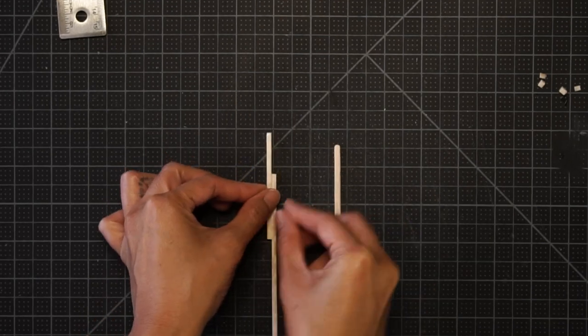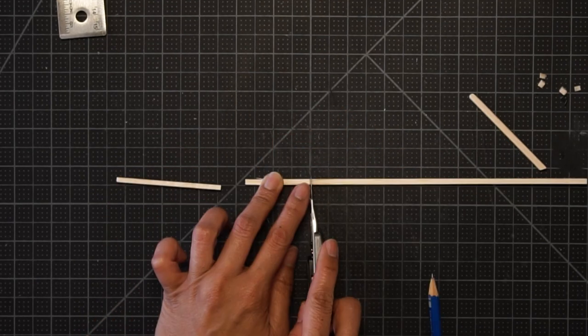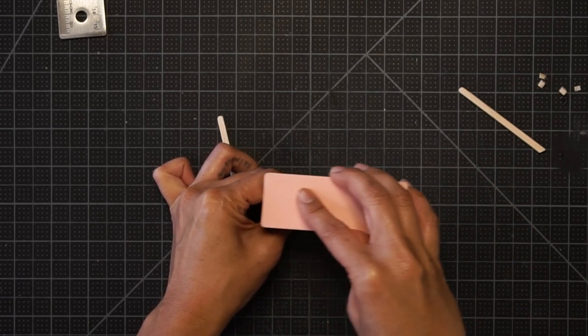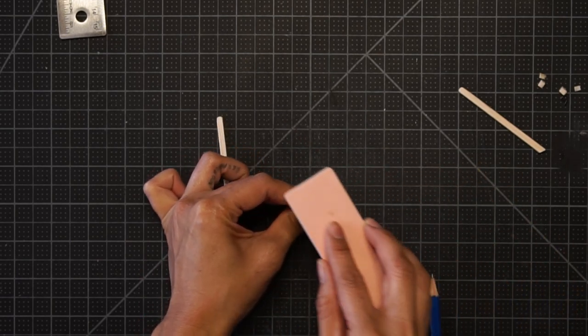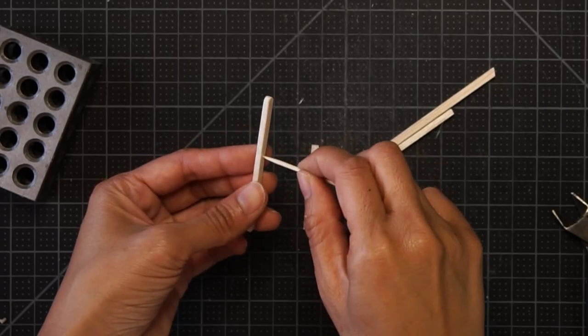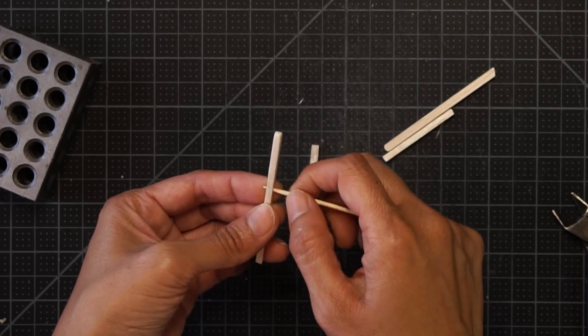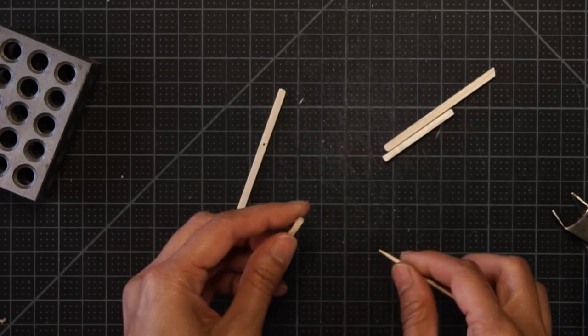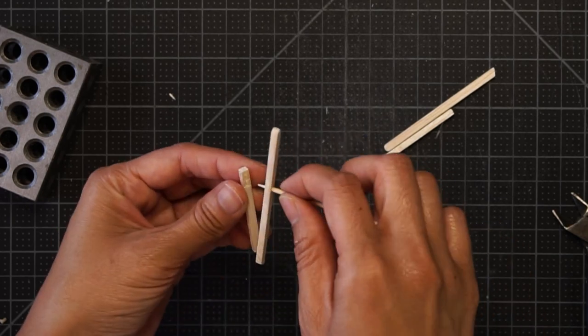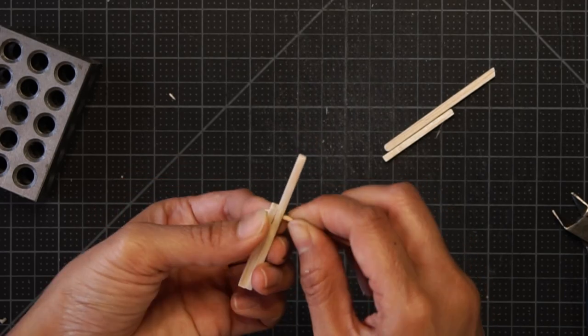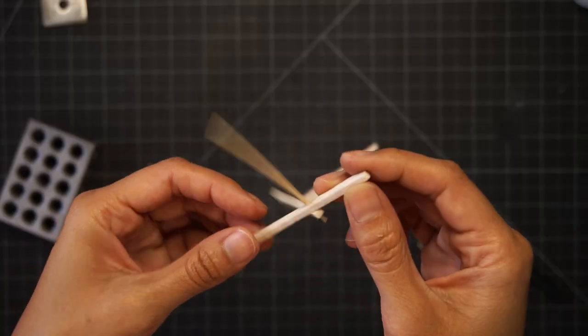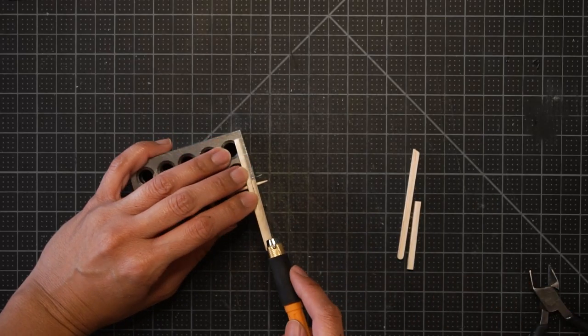Then I measured out the back legs and sanded those down as well. To connect the two pieces, I just used a toothpick. Saw off the excess.